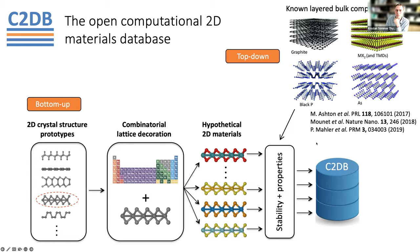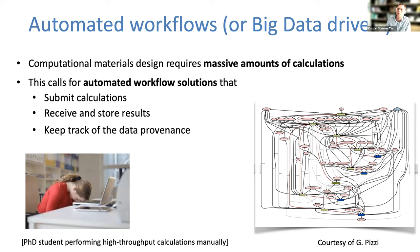Before continuing, I want to make a small digression about high-throughput computations and how to manage them using automated workflows. The C2DB database contains about 300,000 DFT calculations, which is obviously impossible to manage with standard scripts, so one needs a more systematic approach. This is where automated workflow solutions come in. One needs workflows to submit calculations automatically, obtain results, store them in databases, and keep track of all the metadata that documents the calculations and allows us to reproduce them later.